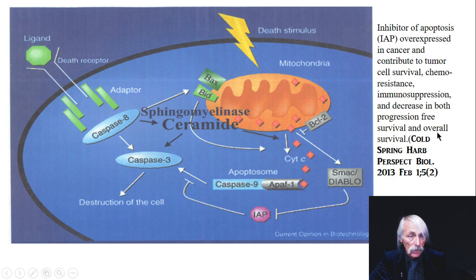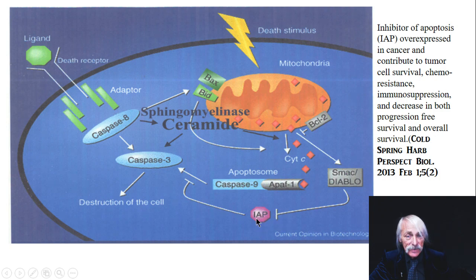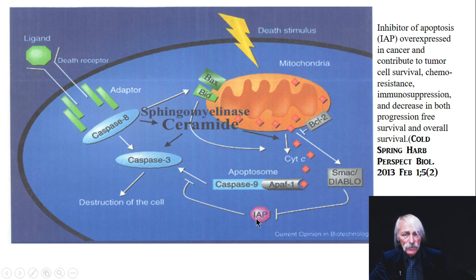Another protein to keep in mind — we'll likely see this in clinical trials — is the inhibitor of apoptosis protein, or IAP. Overexpressed in cancer, IAP contributes to cancer cell survival, chemo resistance, and immunosuppression — all bad things if you want to kill the cancer cell. Something else to target and think about is whether fatty acid synthesis products or the protein itself have any role in making IAP.